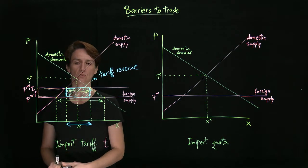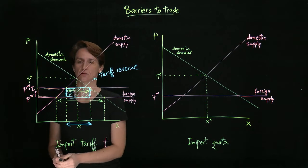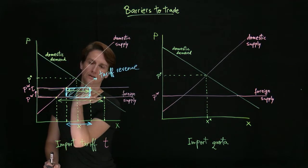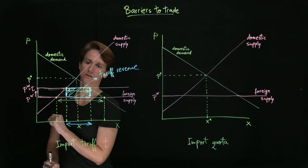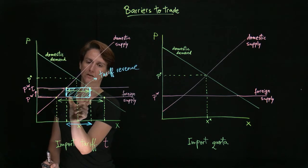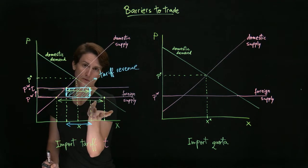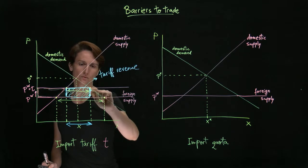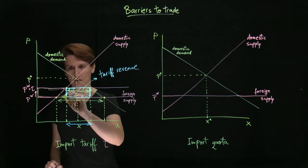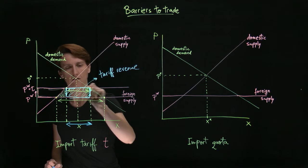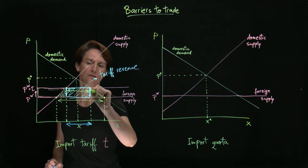So once again, the total surplus now that we've imposed the tariff is smaller for consumers, bigger for producers. Part of that loss is recovered as tariff revenue, so tax revenue essentially. However, these two small areas are simply lost. These are not recovered in any form.